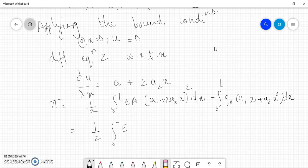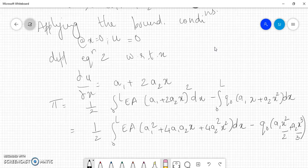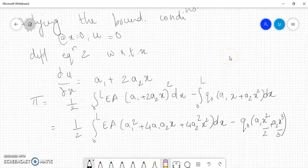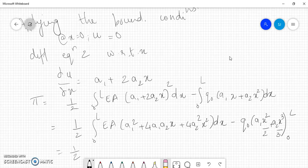Expanding the equation, we get EA/2 times the integral of (a1² + 4a1a2x + 4a2²x²) dx from 0 to L. This equals EA/2 times [a1²x + 4a1a2x²/2 + 4a2²x³/3] evaluated from 0 to L.